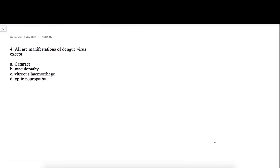So basically, our next question was: all are manifestations of dengue virus except cataract, maculopathy, vitreous hemorrhage, and optic neuropathy. The answer here would be cataract. Remember, sometimes the dengue virus, which is a very commonly asked question in your PG exam, can affect your eye also. So we would just enumerate what are the ophthalmic manifestations of dengue fever.